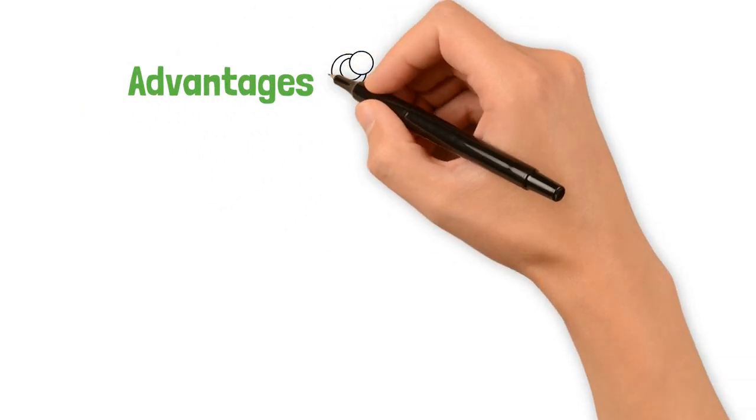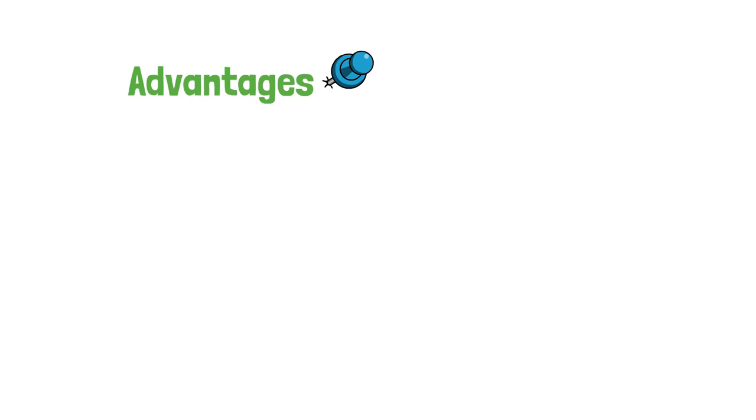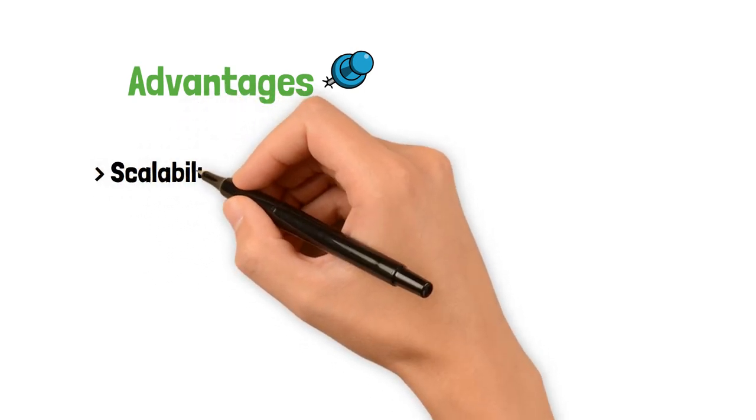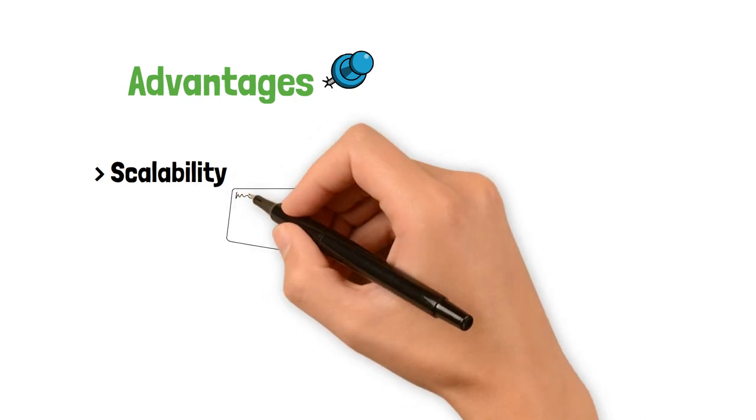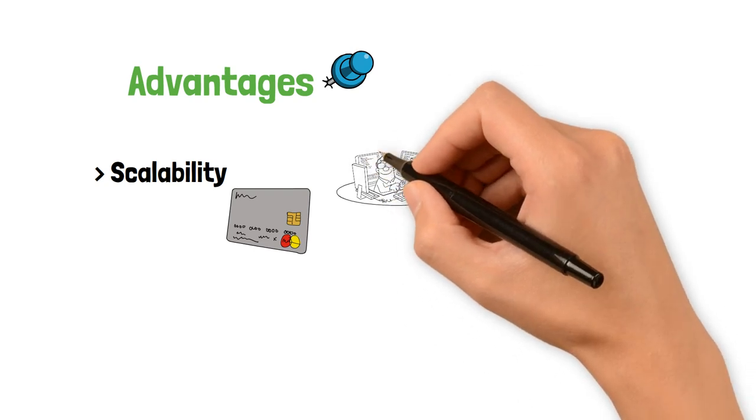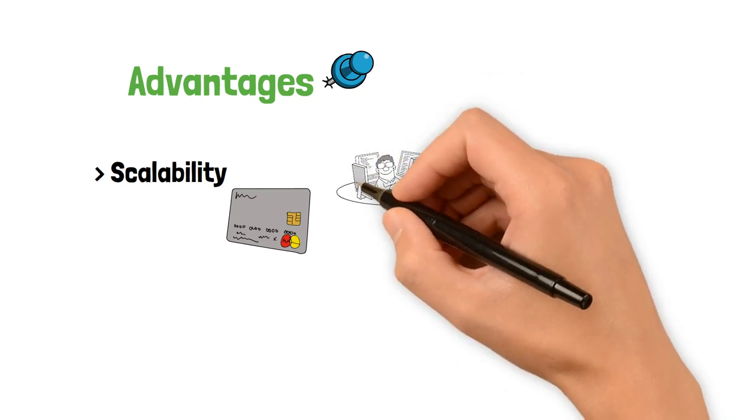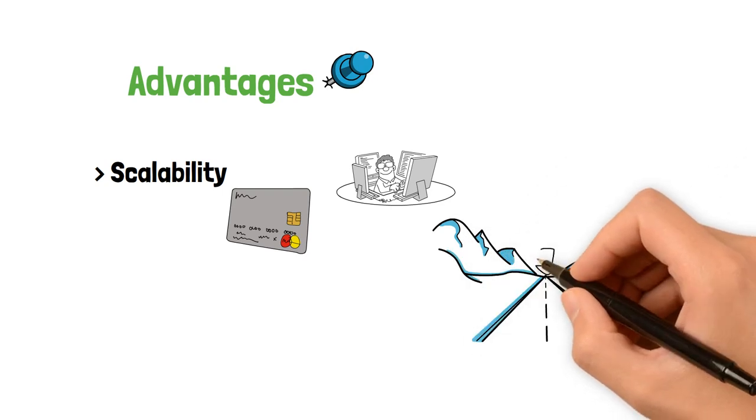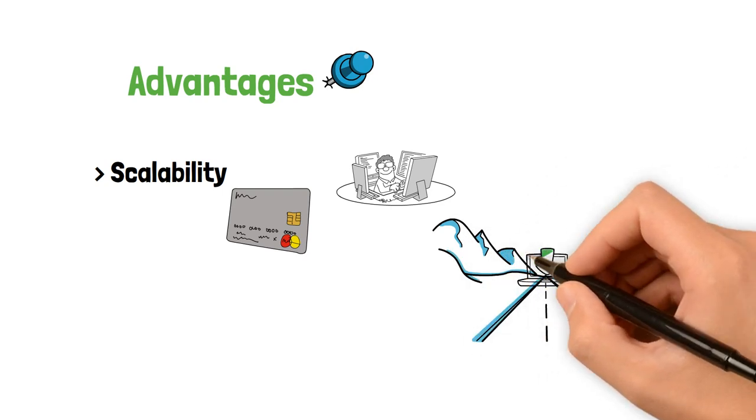Ethereum 2.0 brings several advantages and benefits to the network. First and foremost, it significantly improves scalability. With shard chains, Ethereum can process multiple transactions and smart contracts simultaneously, increasing the network's throughput. This enhancement opens up opportunities for mass adoption and paves the way for the development of resource-intensive applications.